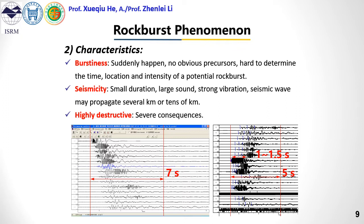A rock burst has characteristic features. The first is pre-burst warning: a rock burst normally happens suddenly with no obvious precursors to human eyes, making it hard to determine the time, location, and intensity of a potential rock burst. The second feature is seismicity: a rock burst is normally accompanied by ground wave vibration. The seismic wave may propagate several to tens of kilometers, but the duration is generally small — normally less than 7 seconds, with the main shock usually 1 to 1.5 seconds. The third feature is that it is highly destructive, causing serious and severe consequences.